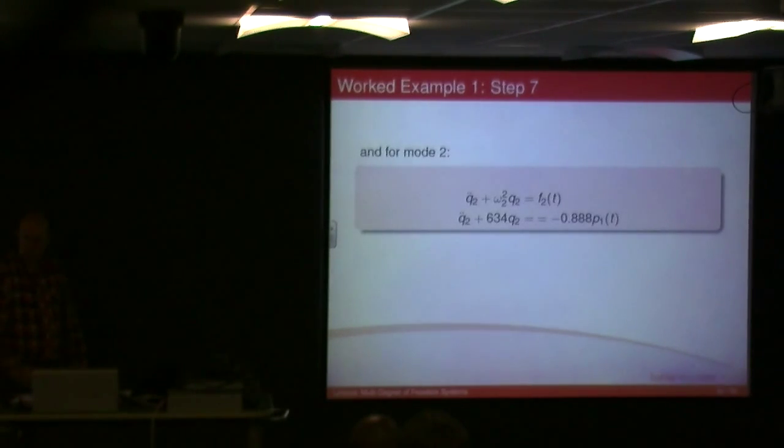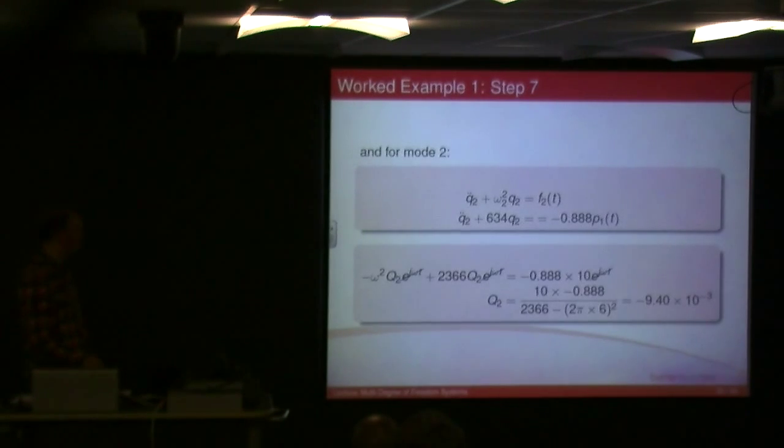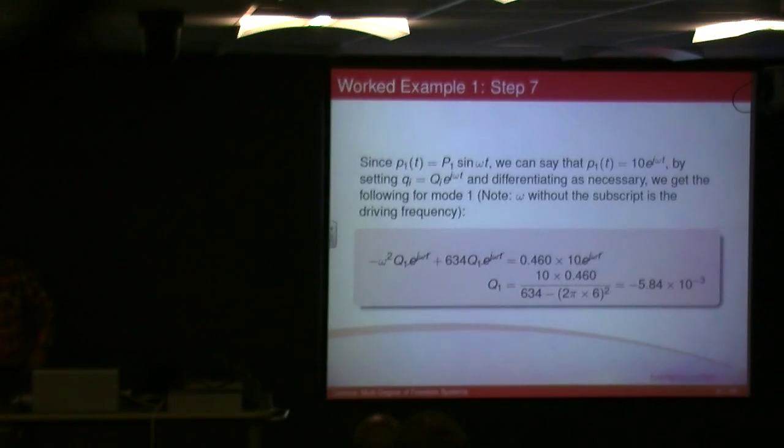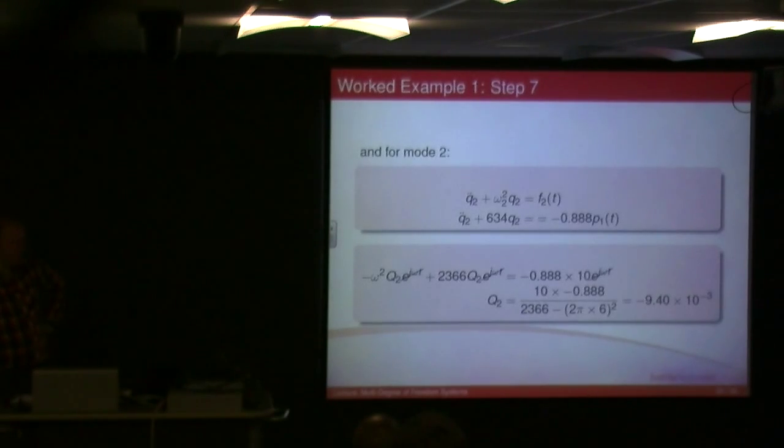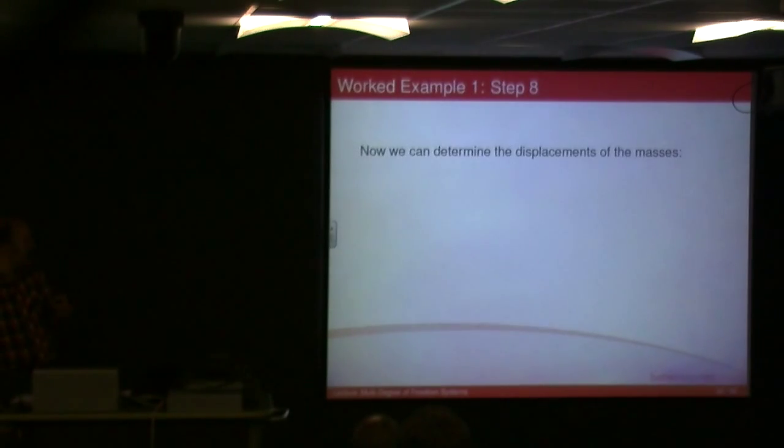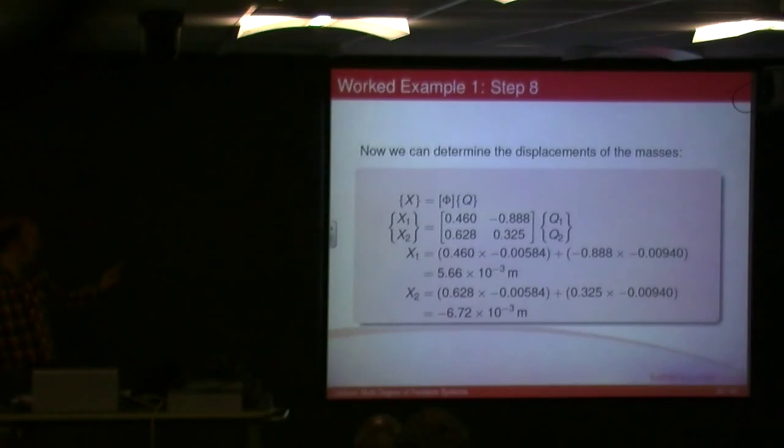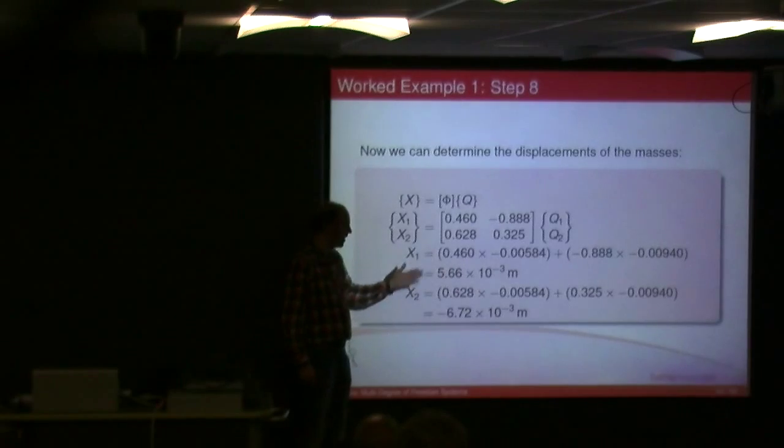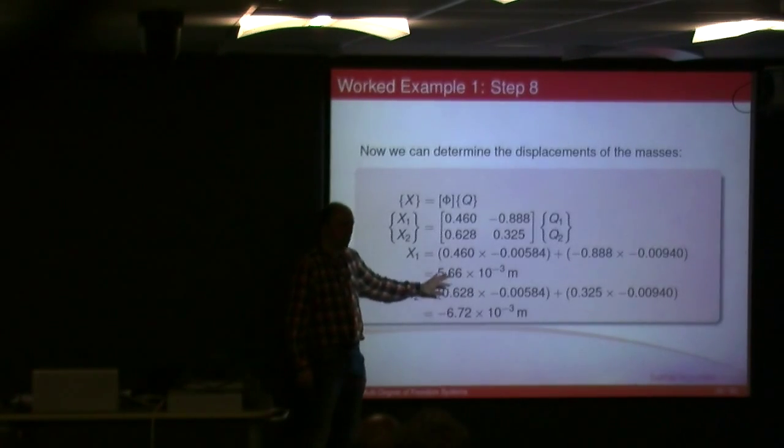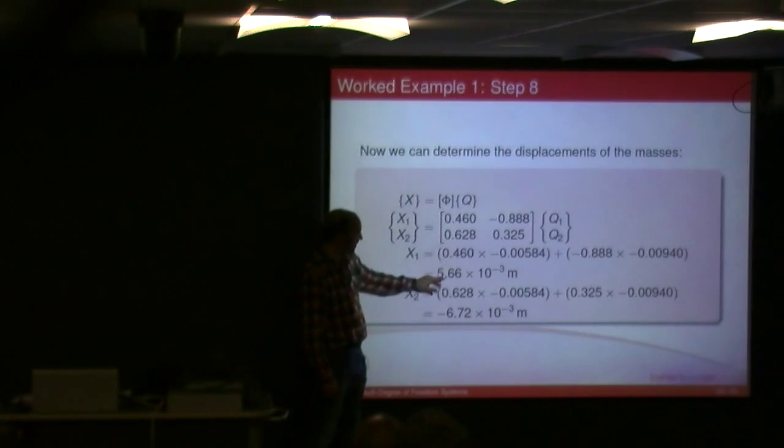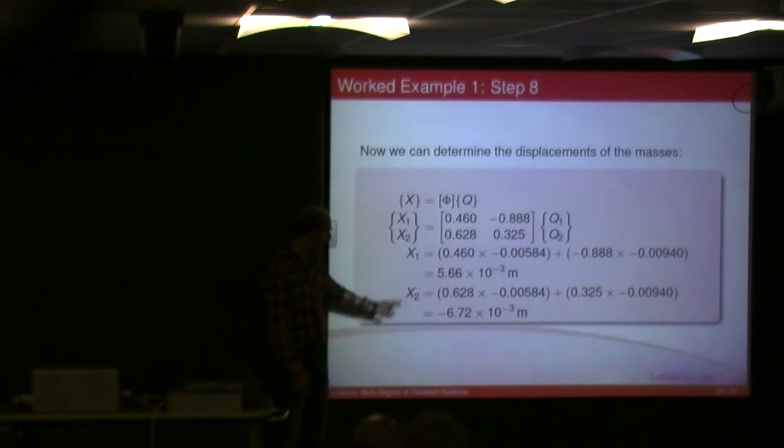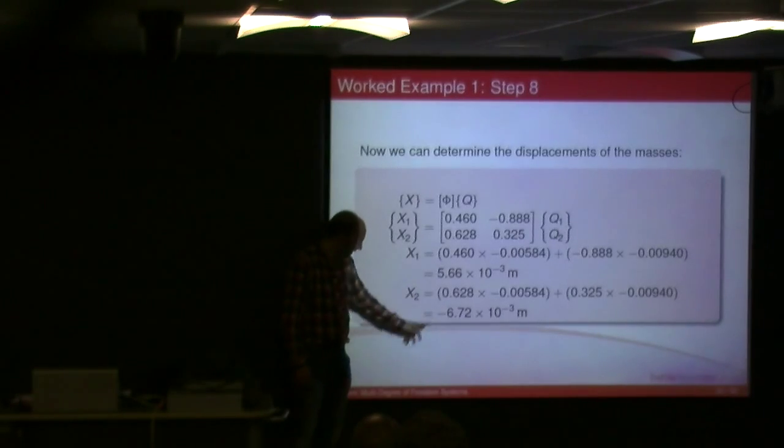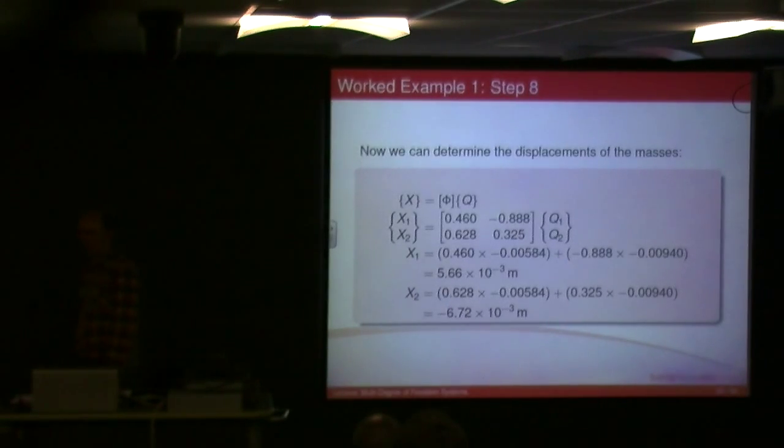And for mode 2, there's the equation, apply the same logic, and you get q2. So we've got two values, we've got minus 5.84 times 10 to the minus 3, and we've got minus 9.4 times 10 to the minus 3. Those are the values for q, and obviously we have to multiply them by phi, which is there to get our values for x1 and x2, which is the displacement of oscillation, our magnitude of oscillation for that applied force. And we can see that if you go through the process, you get 5.66 times 10 to the minus 3 for x1, and minus 6.72 times 10 to the minus 3 meters for x2.